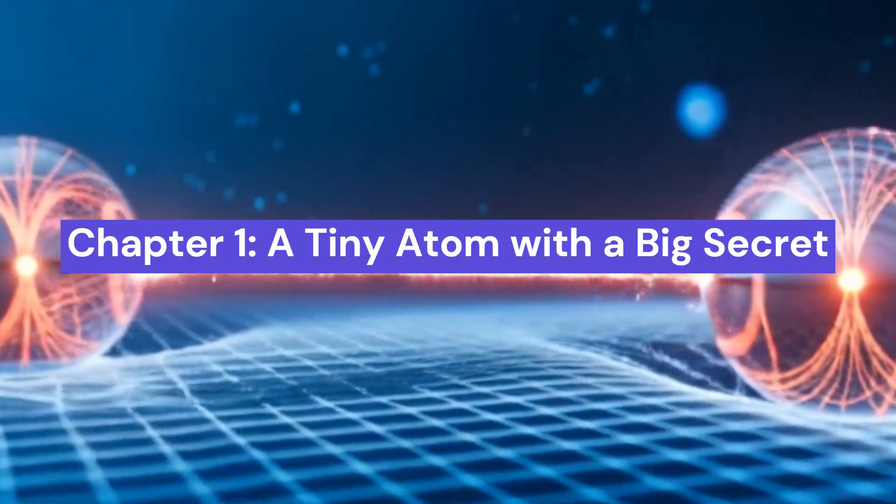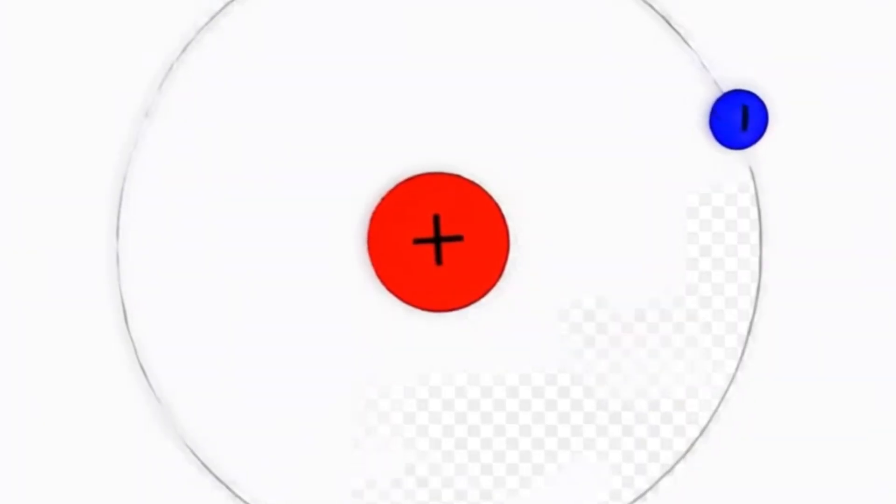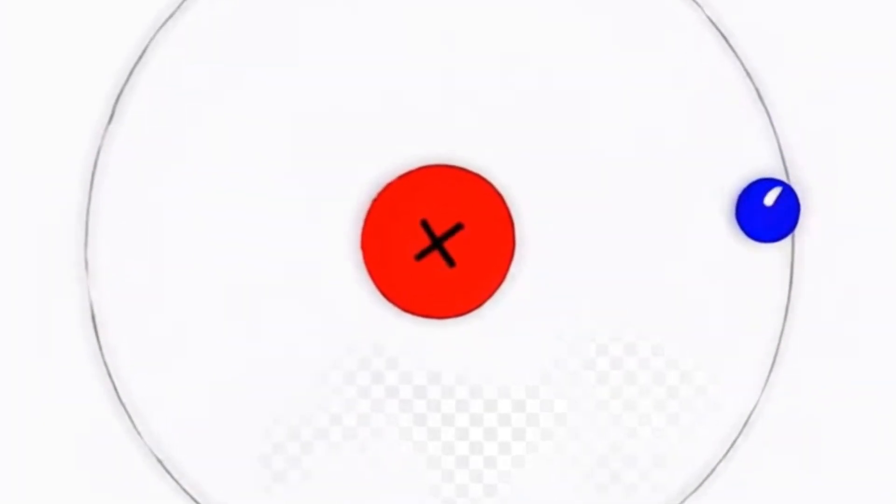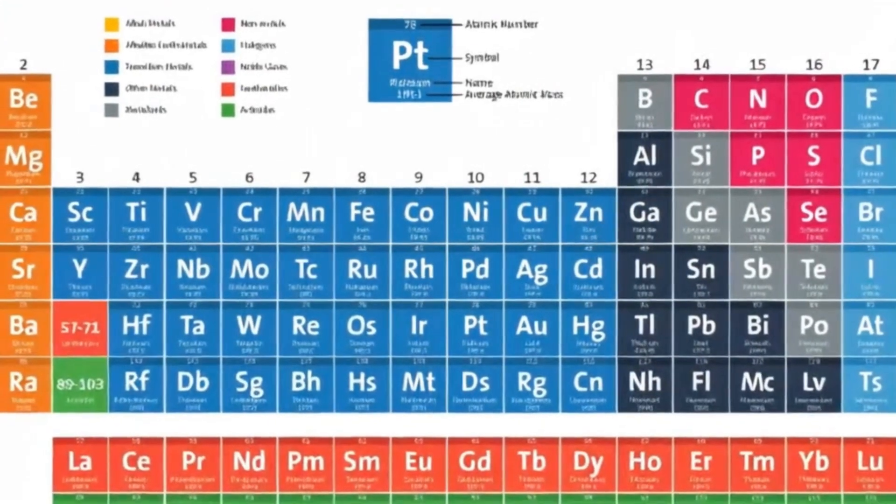When you think of hydrogen, you probably picture something simple: a light, basic atom, just one proton and one electron. It's the first element on the periodic table and the most common one in the universe.